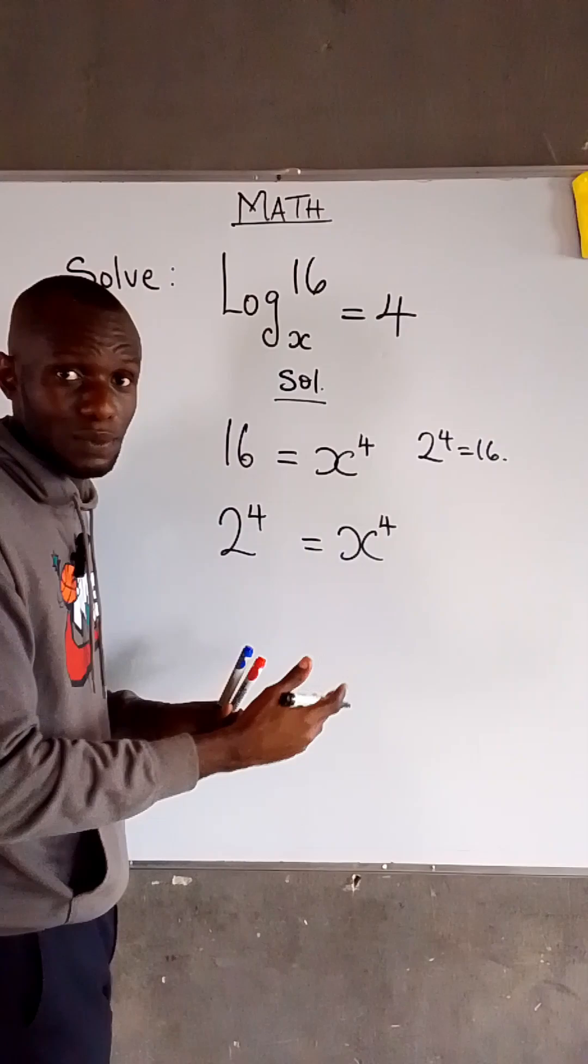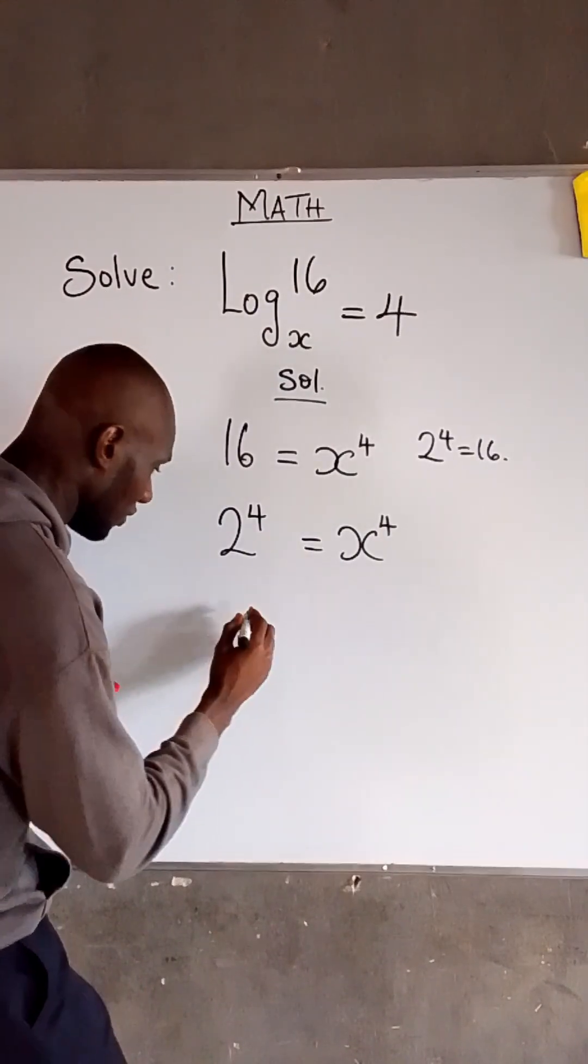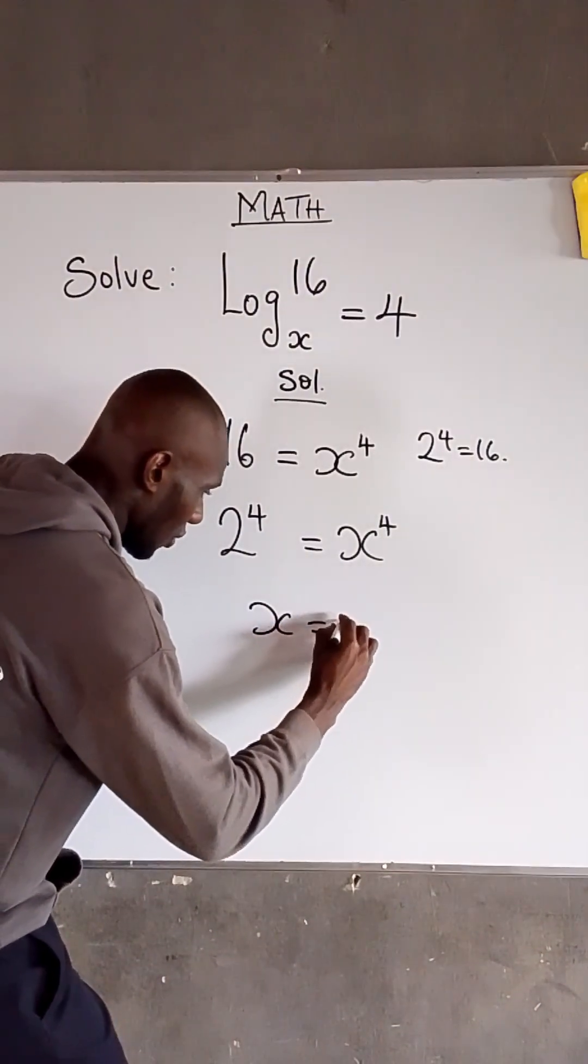Now, since their powers are the same, we are going to equate their bases. Therefore, we have that x is equal to 2.